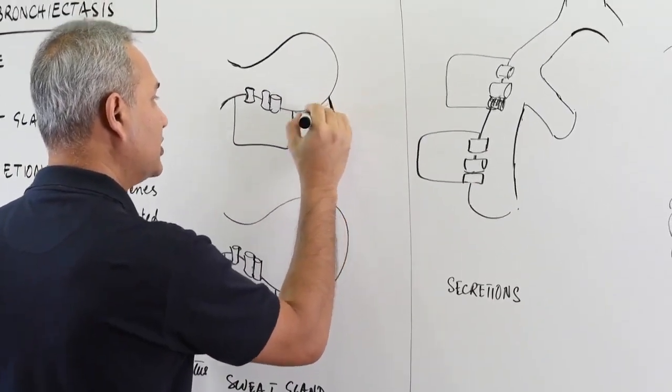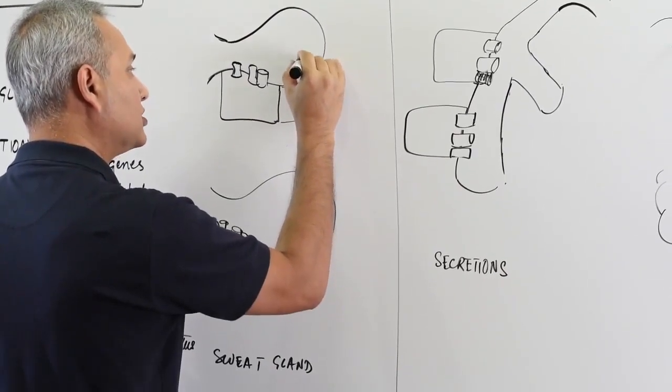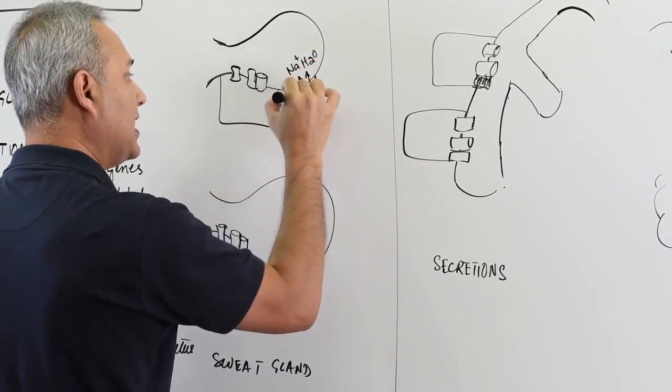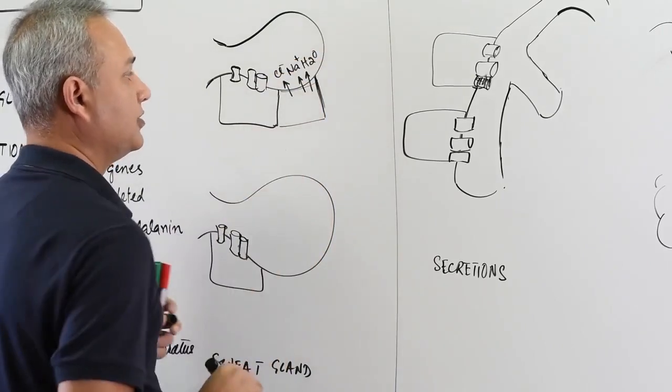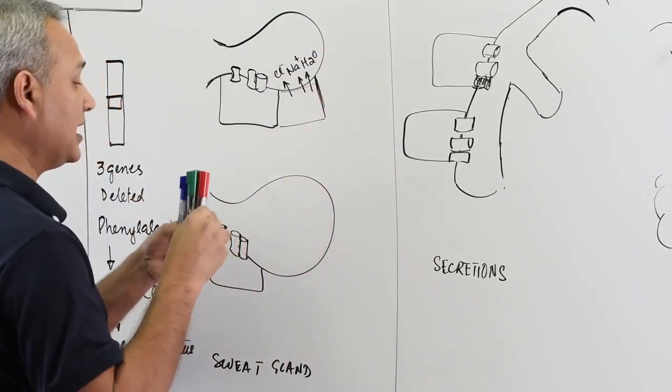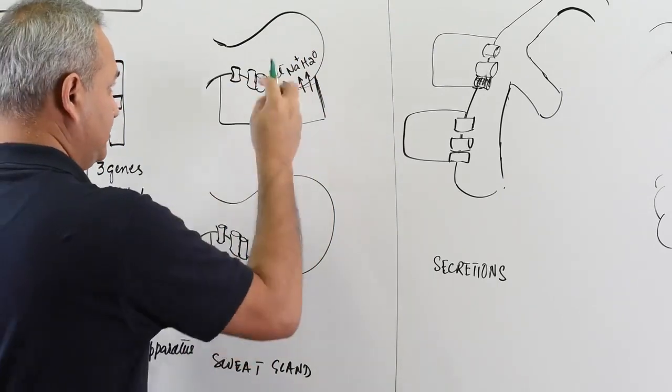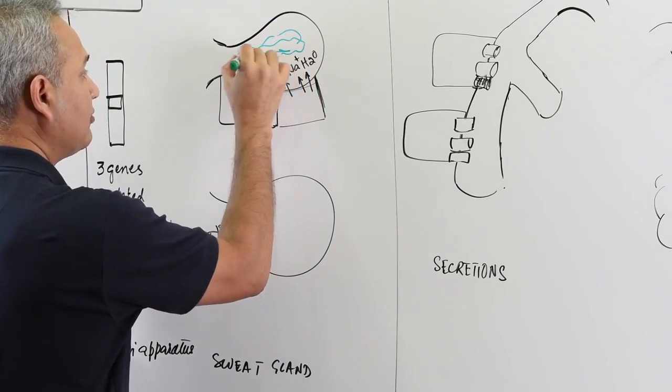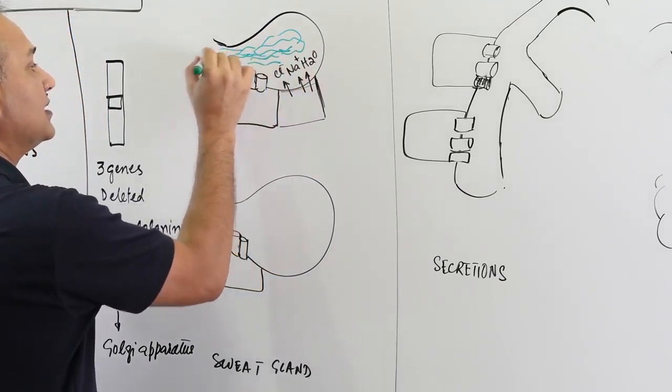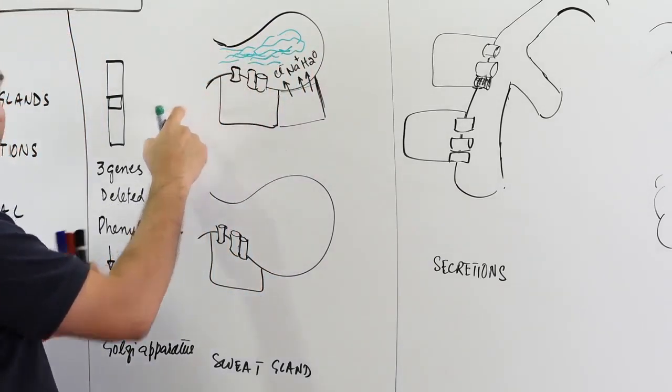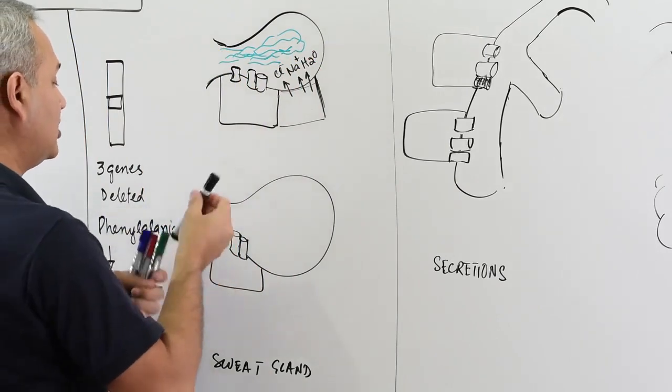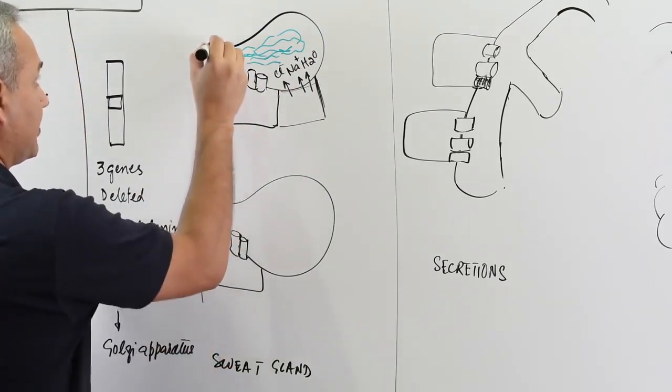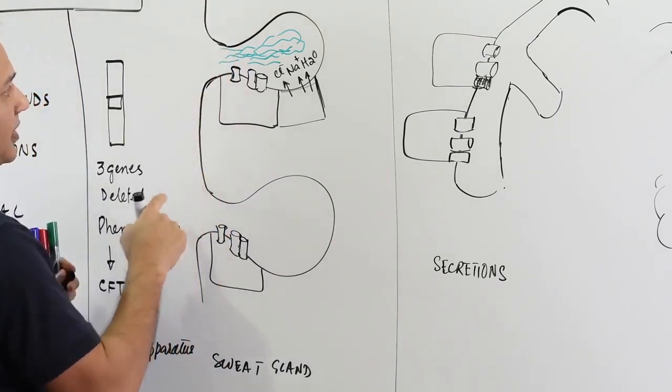The way the sweat is produced is we extrude the water and the sodium and chloride. So these are thrown out and that becomes sweat in the gland. However, before this sweat can go out on the surface of the skin, so if this was skin surface, if this was skin here...